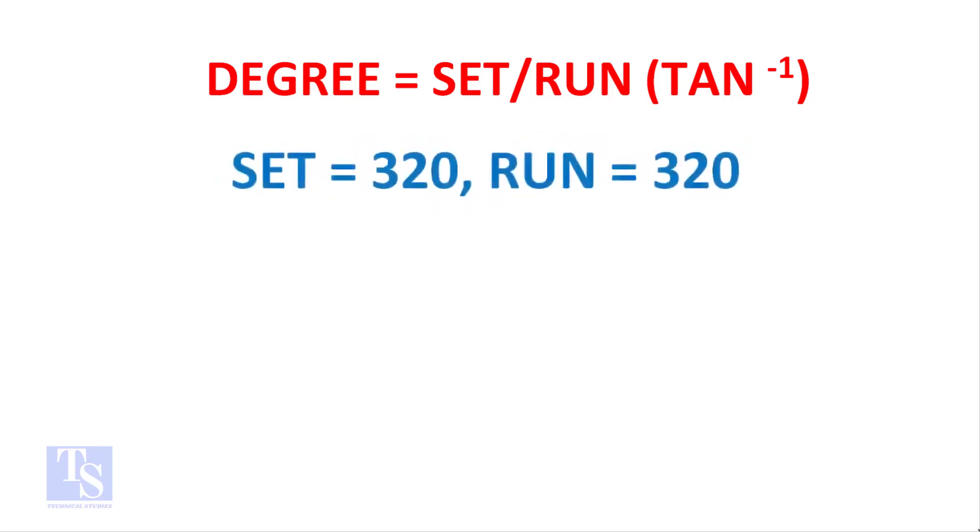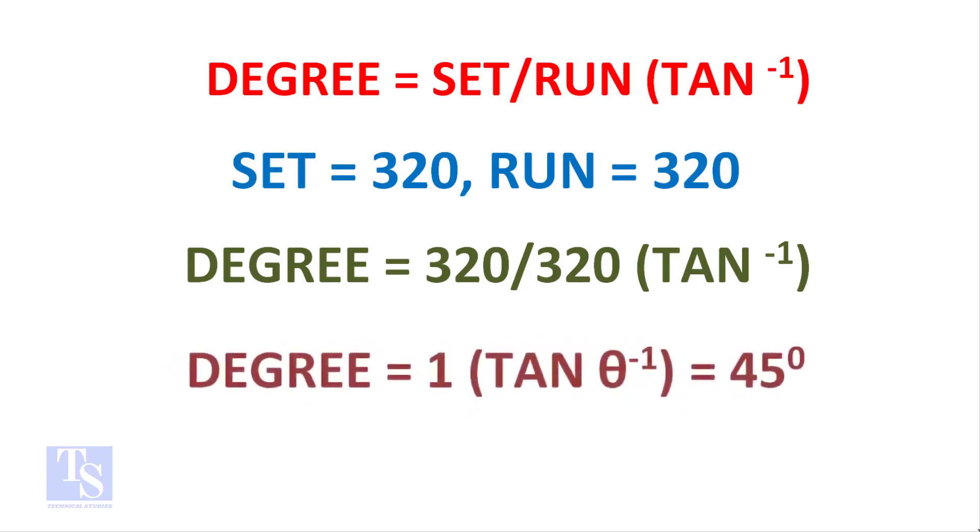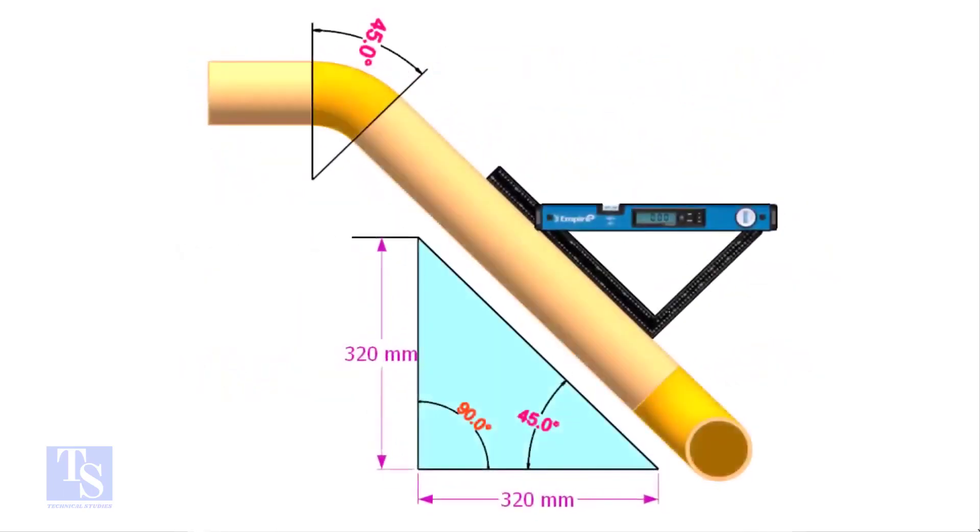Set and run both are 320 millimeters. Degree equals 320 divided by 320, which equals 1, then tan inverse of 1 equals 45 degrees. So the equation proves that the line slope is 45 degrees.